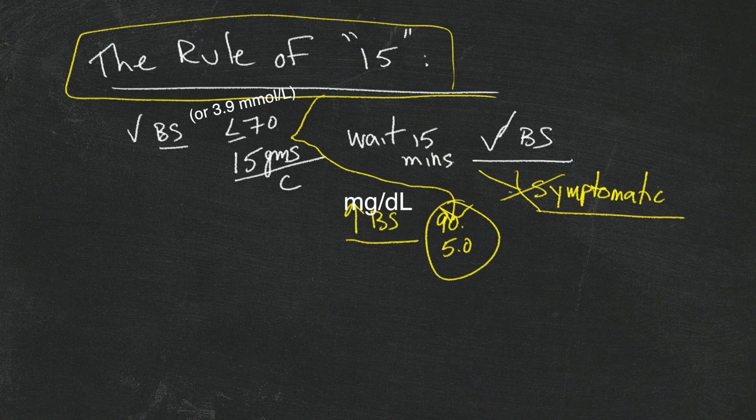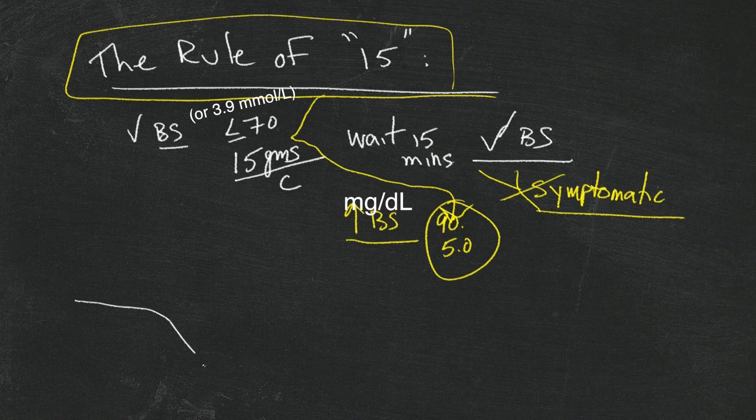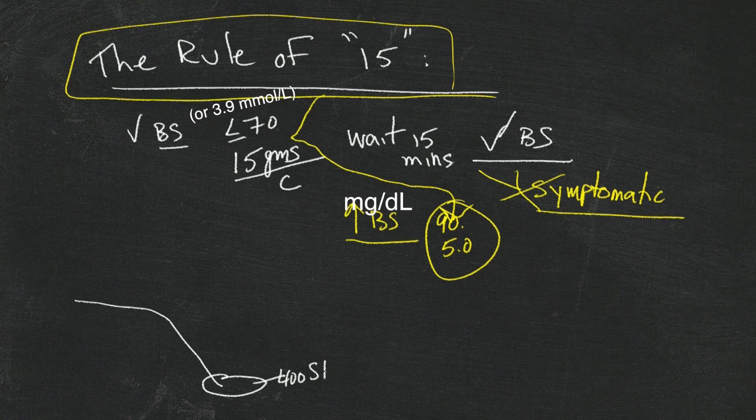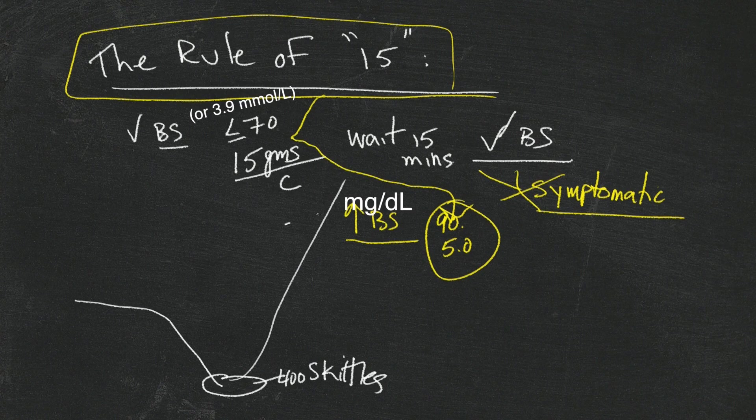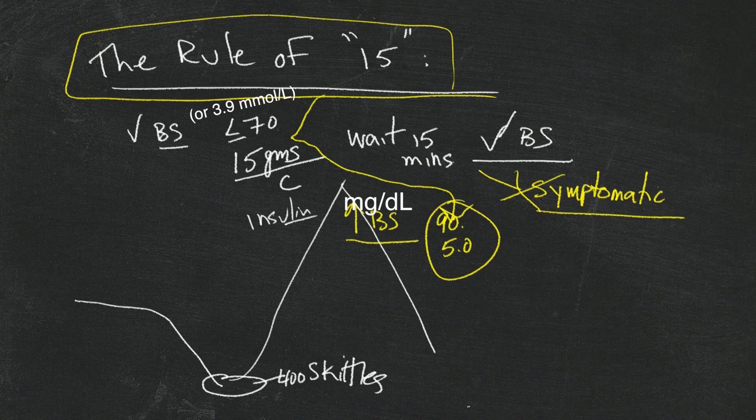That's key to managing blood sugars effectively, because what you don't want to do is go really low, overtreat it with 400 Skittles because you're starving to death, then have your blood sugar go all the way up, have to take some insulin to bring it down, and go low again.